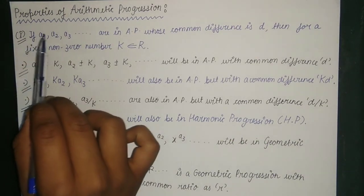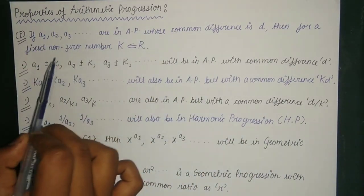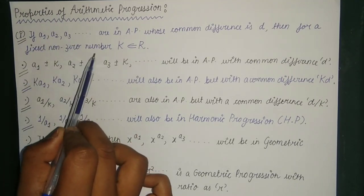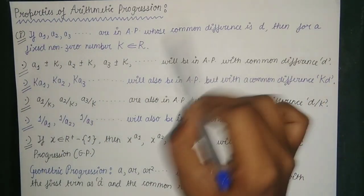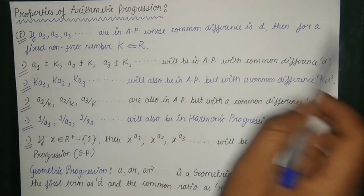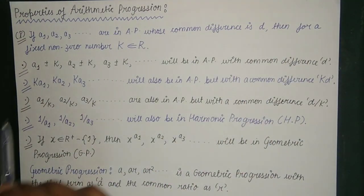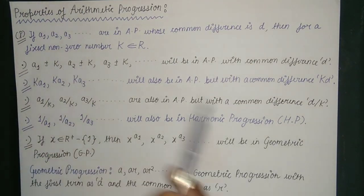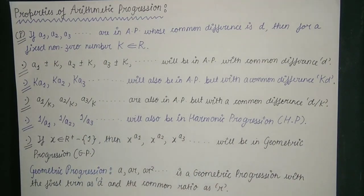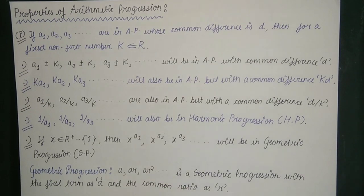We are assuming that a1, a2, a3 till aN are in AP. Therefore a2 minus a1 is equal to a3 minus a2, which equals d, where d is the common difference. Then for a fixed non-zero constant real number k, the sequence a1 ± k, a2 ± k, a3 ± k till aN ± k is also an arithmetic progression with the same common difference d.